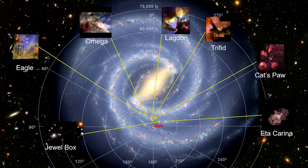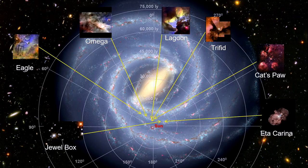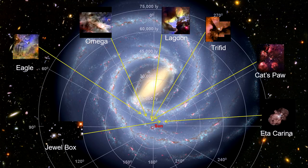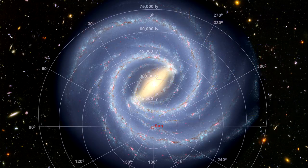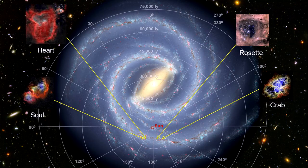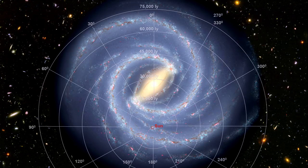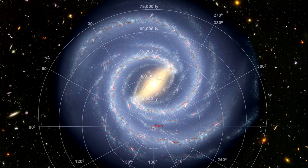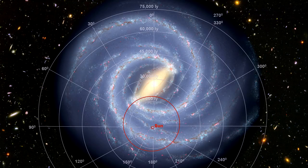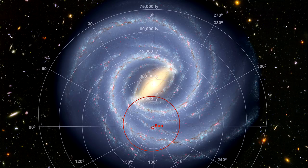In Sagittarius, we see the jewel box star cluster, and the Trifid, Omega, Lagoon, Eagle, and Cat's Paw nebulas, among others. In Perseus, we see the Rosetta, Heart and Soul nebulas, as well as the Crab Supernova, to name just a few. In fact, except for the hypervelocity stars and a few of the supernova remnants, everything we have seen in this chapter is within this red circle. As vast an area as we have covered, it is only a fraction of the Milky Way galaxy.